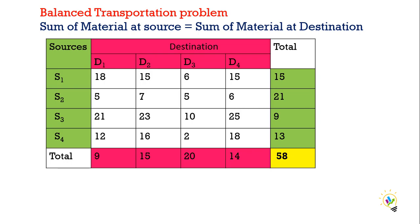The total sum of material at source is equal to the total sum of material at a destination. The total sum of source is 15, 21, 9, and 13 — total is 58. At the same time, destination also, if you add, it is going to become 58. The sum of material at source is equal to sum of material at destination. So this problem is a balanced problem.